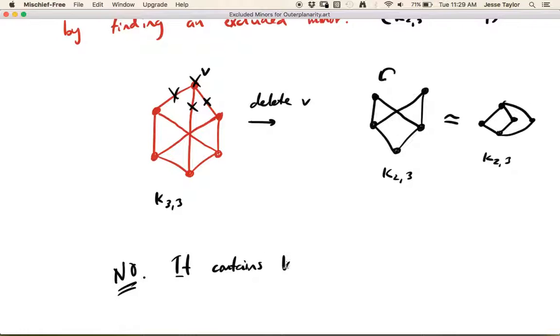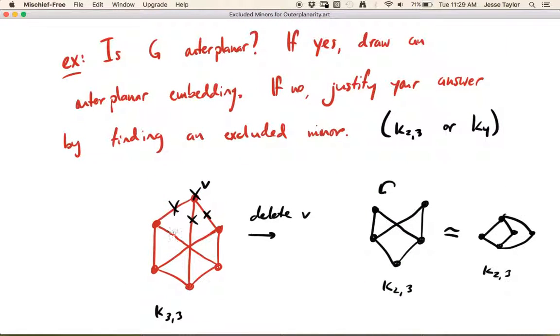It contains K23 as a minor via this process that we just went through. You just delete one of the vertices, you get K23. And that's plenty of justification. Now we don't have to explain our thought process. We don't have to explain you can try and draw it like this, and you can try and draw it like that. We have a quick test for saying this has a specific excluded thing, it can't have the property I'm after. That's what an excluded minor result is. In this case, the specific thing is K23 or K4, and the property is being outer planar. So this graph is not outer planar because it has one of these. Just like if you were looking to tell if a graph is planar, you could say no if you find K33 or K5. So these are the excluded minors for outer planarity.